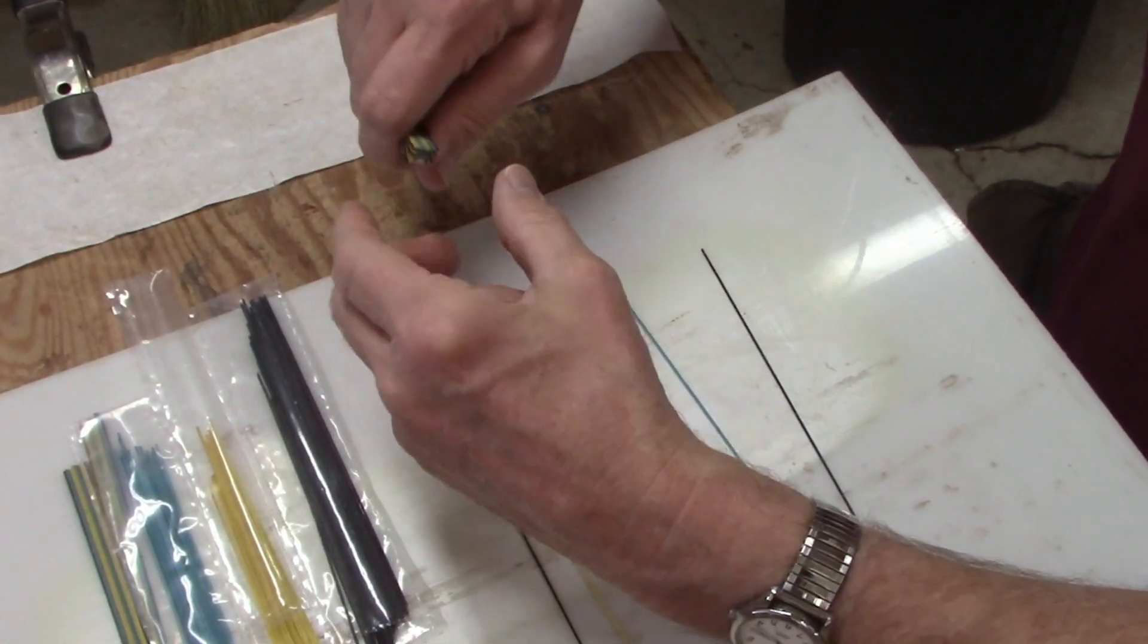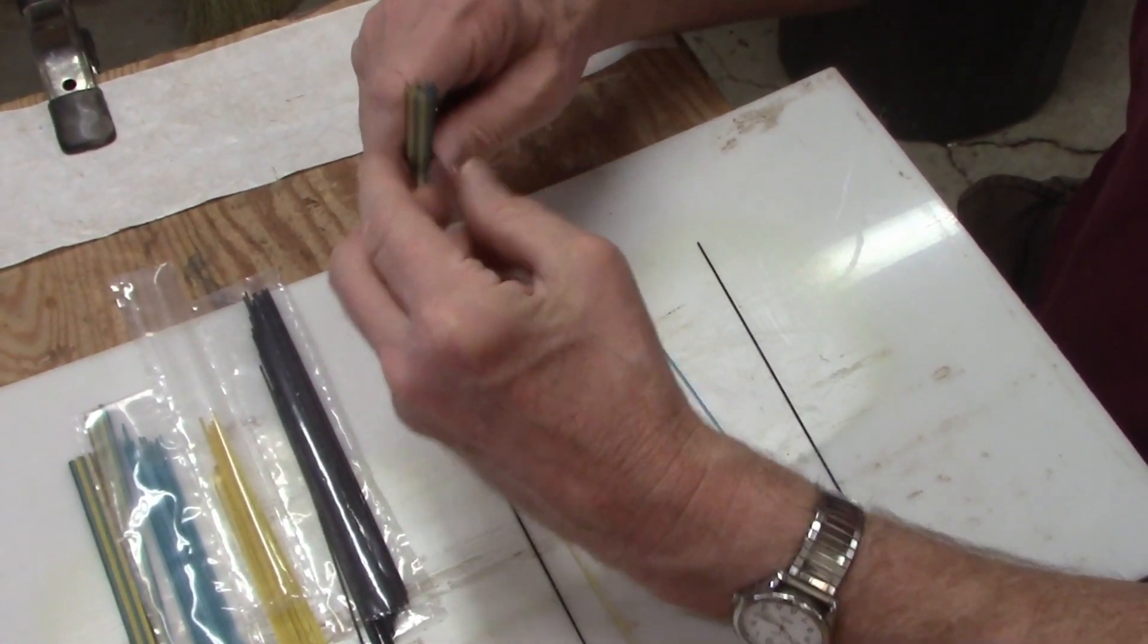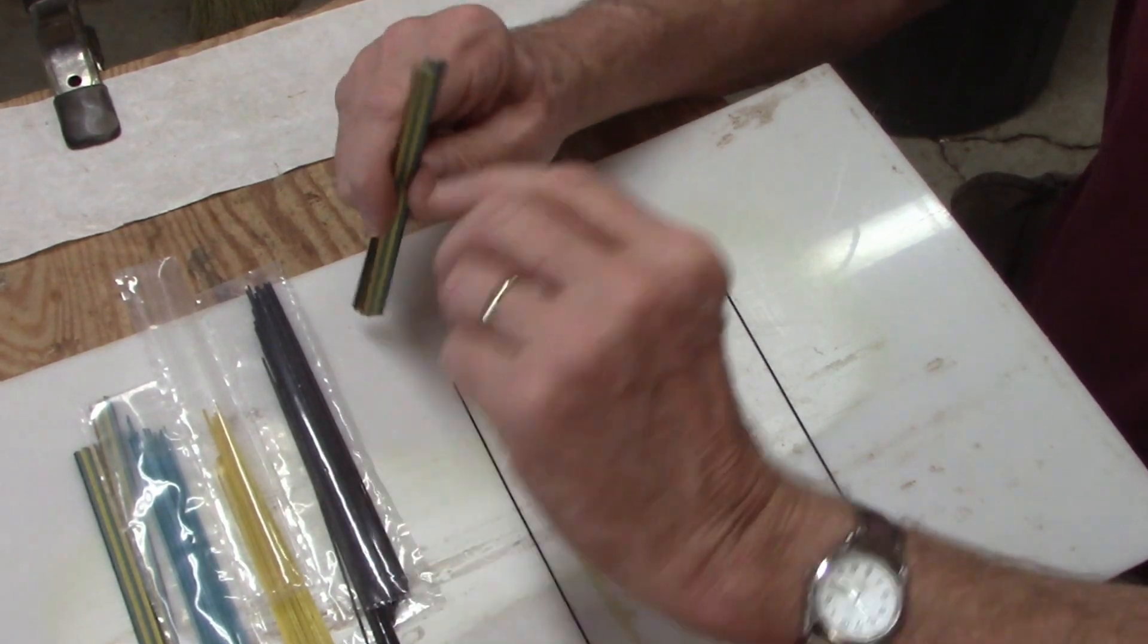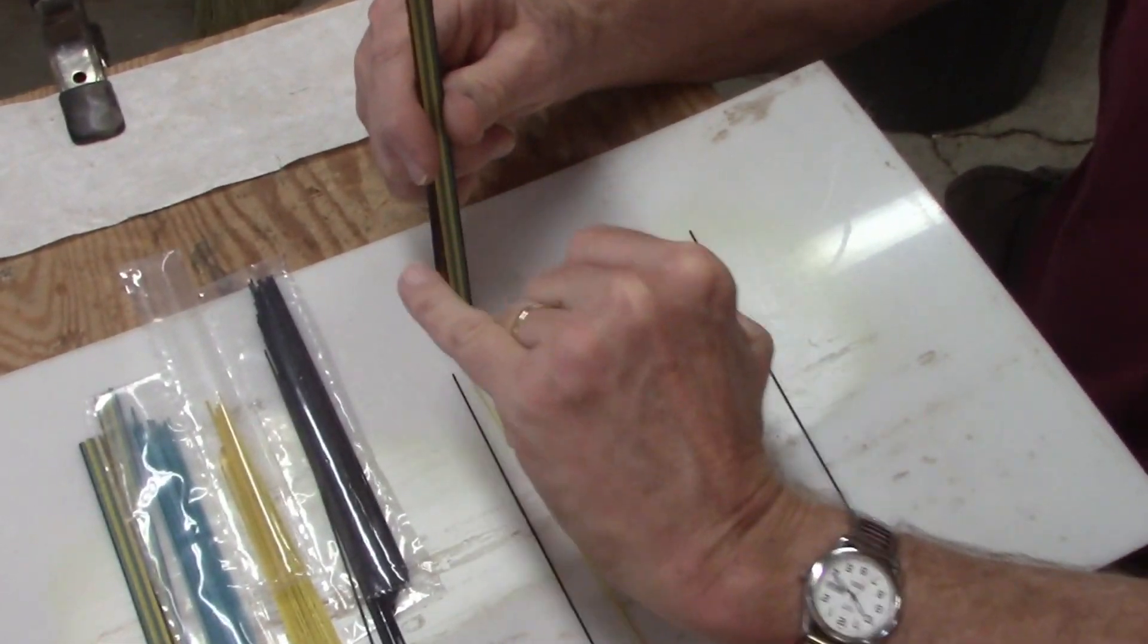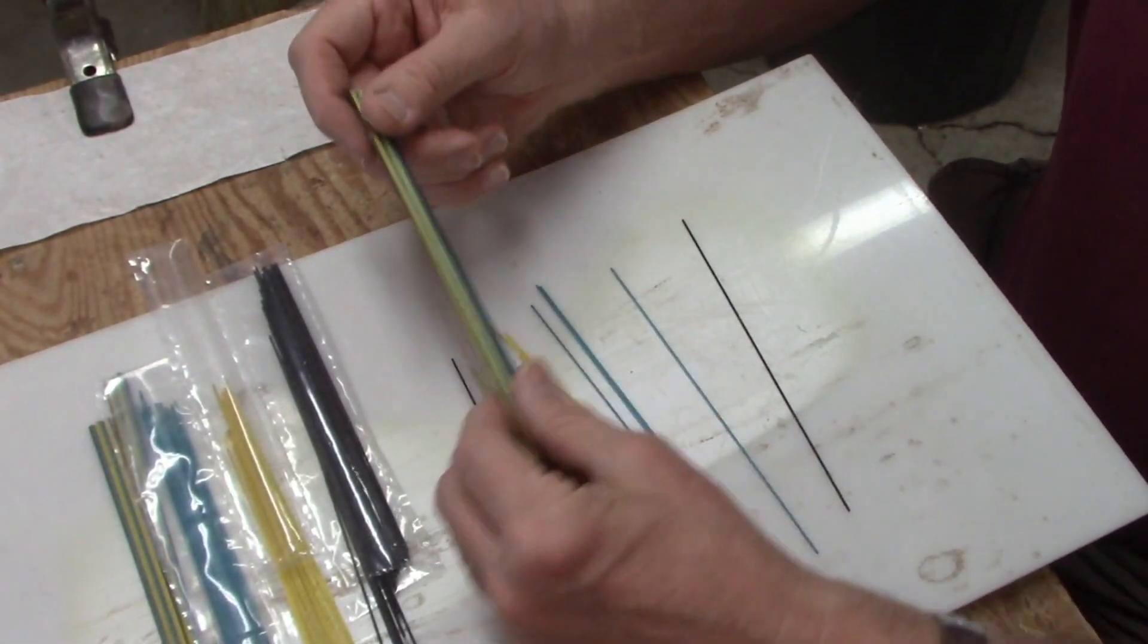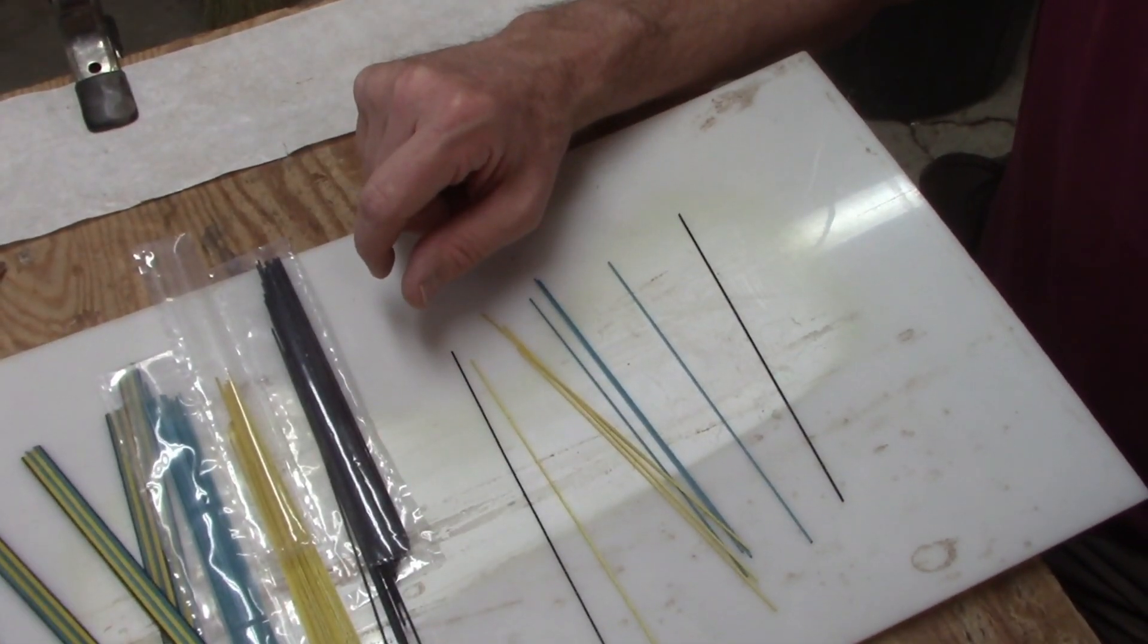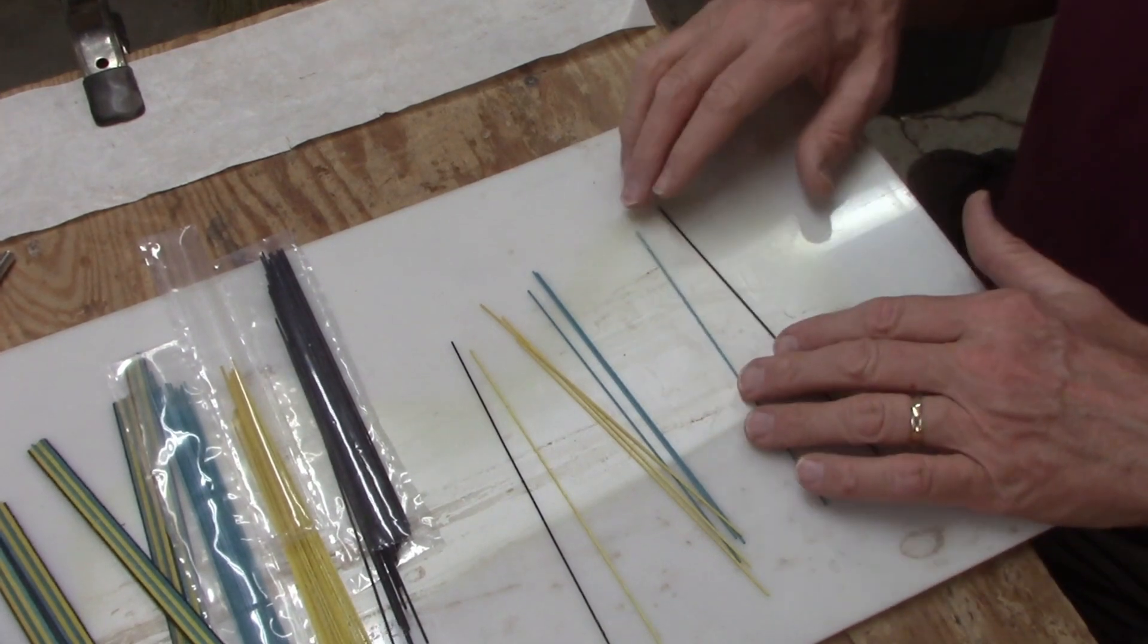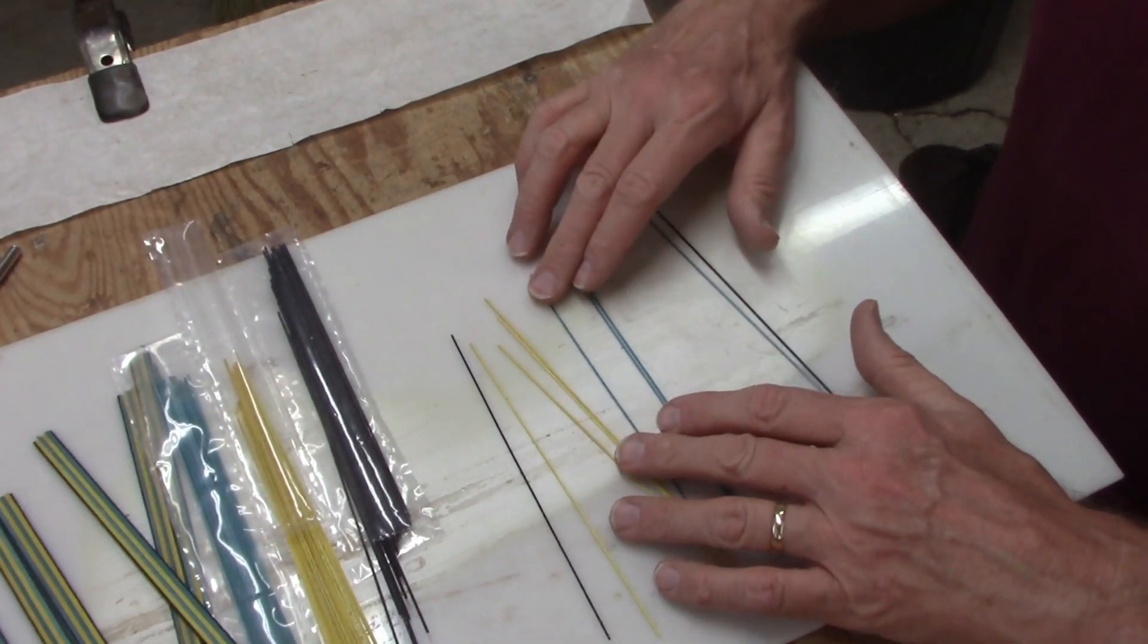When I then cut them in cross section, I will see the pattern that I'm looking for, and those little cross cut pieces will be inlaid into the channel for the rosette.